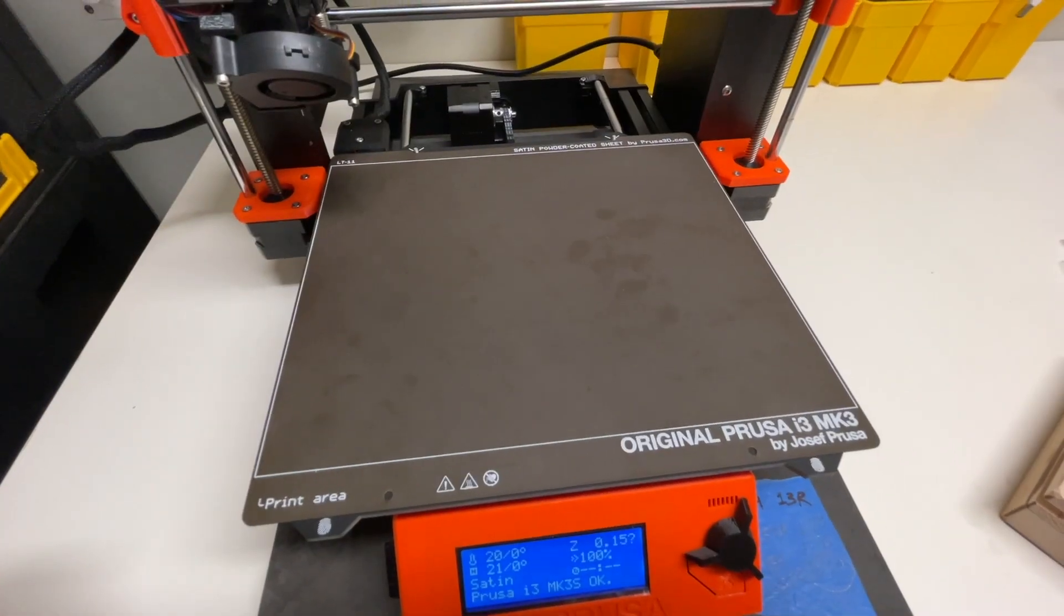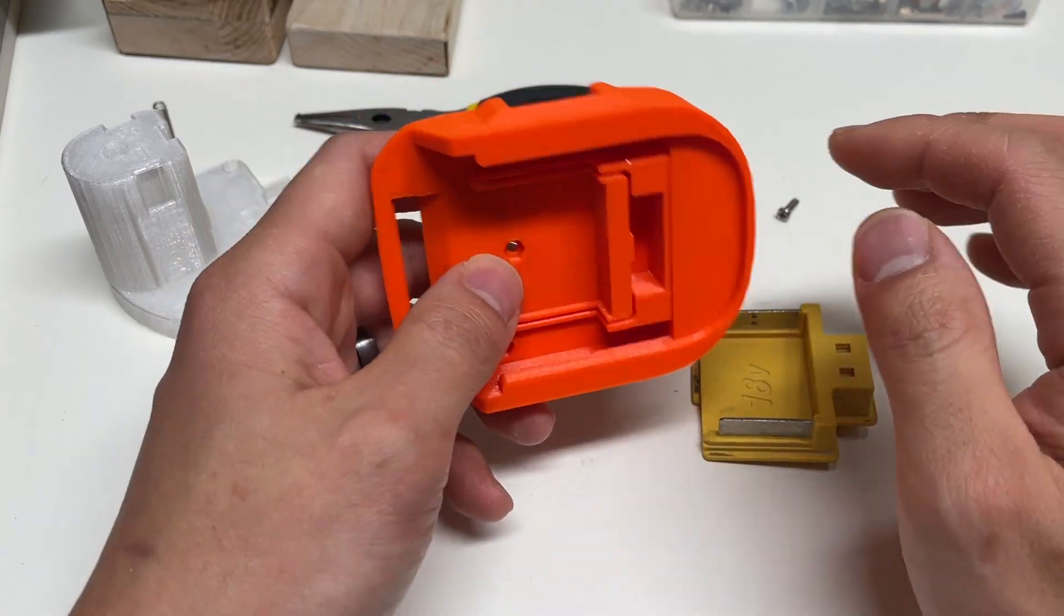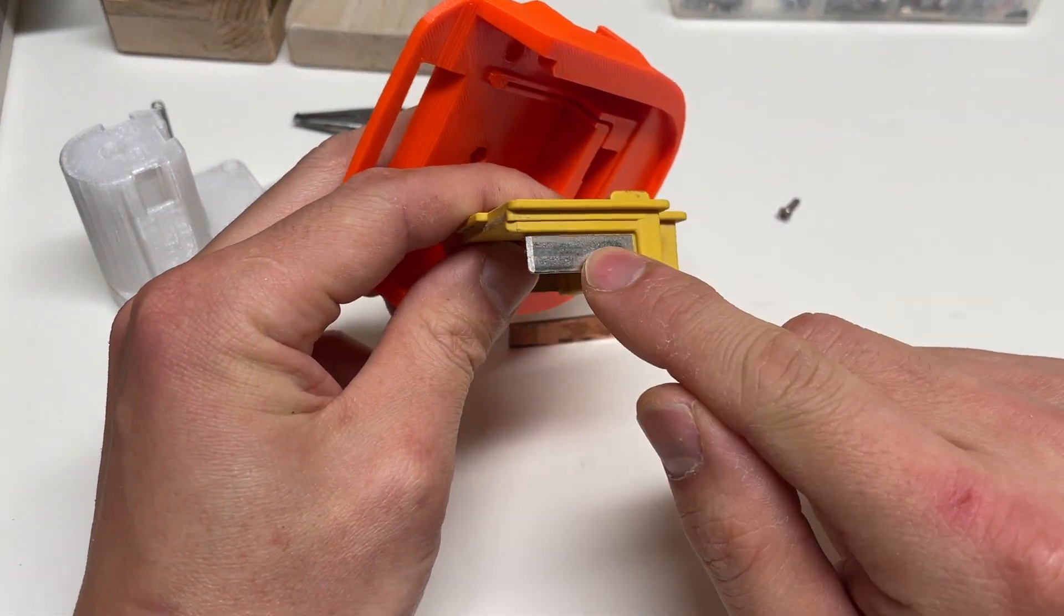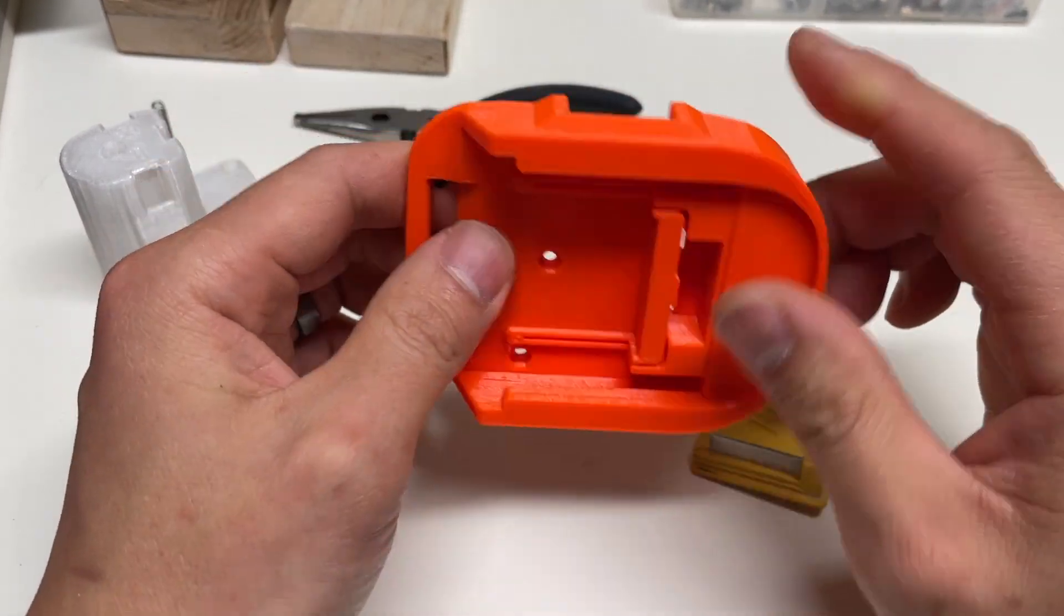First things first, print the parts. The first thing we're gonna want to work on is to replicate the metal contacts on the Makita half of our adapter.